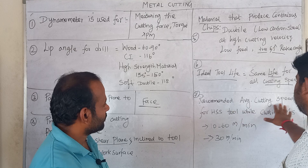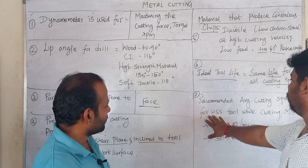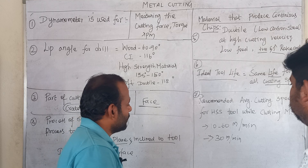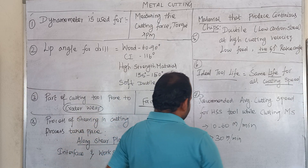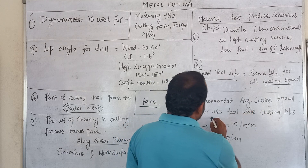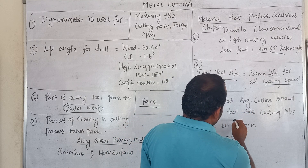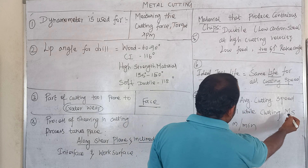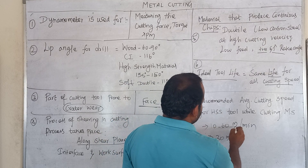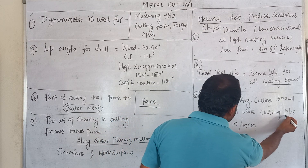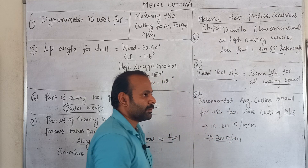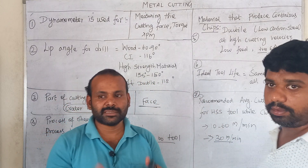The recommended average cutting speed for high speed steel tools while cutting medium steel is 60 meters per minute. For soft material, the cutting speed is 30 meters per minute. Thank you, champions.